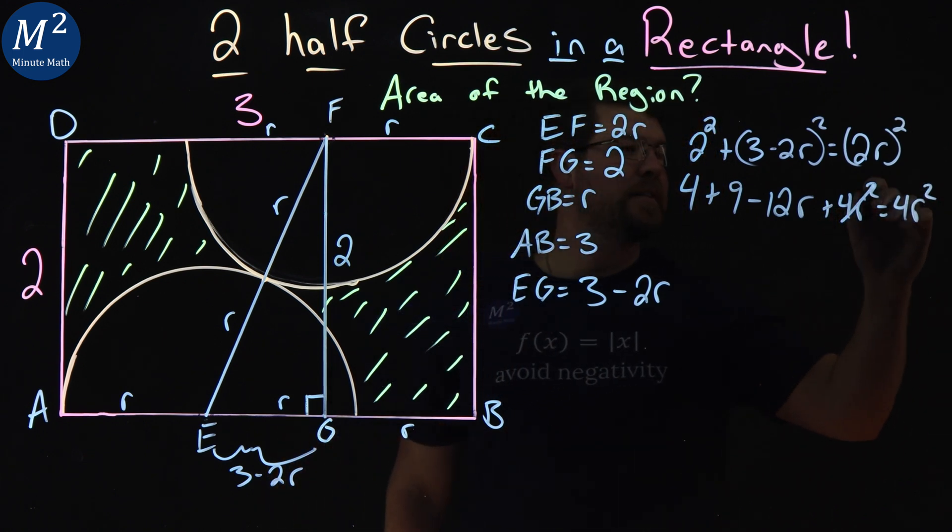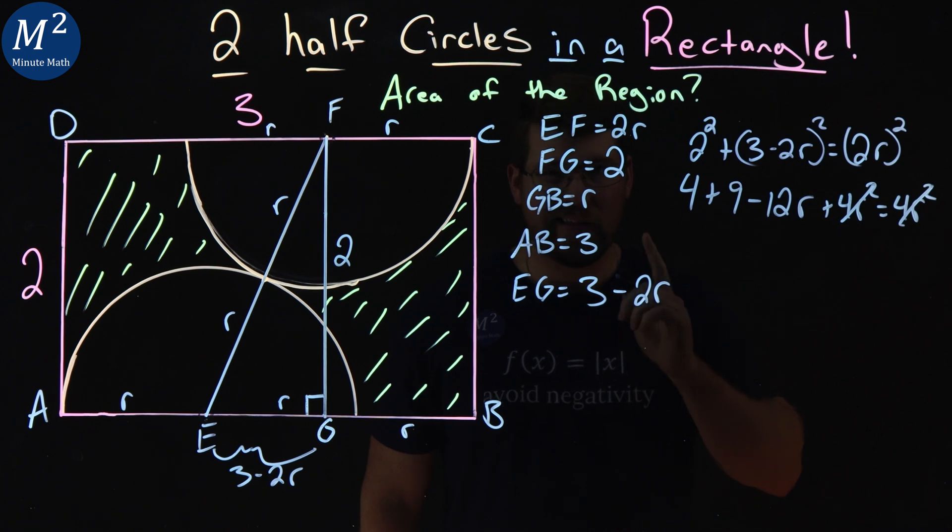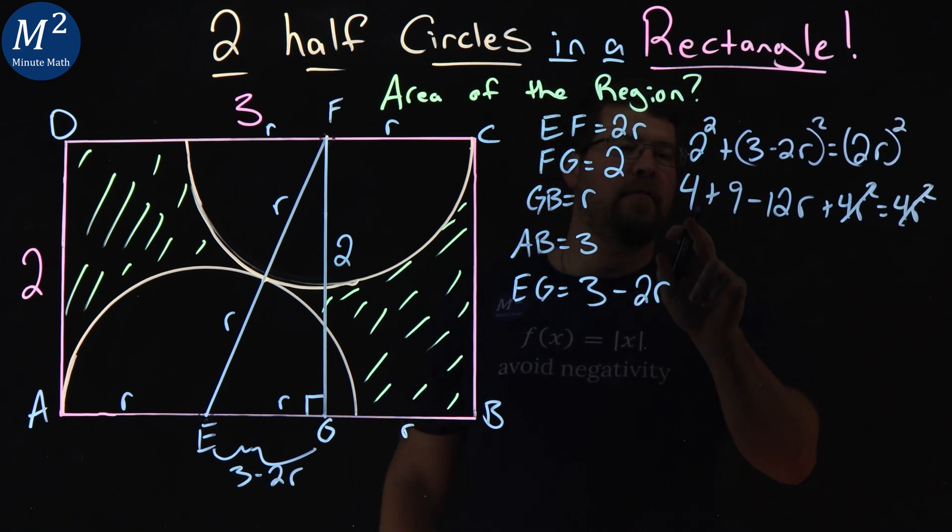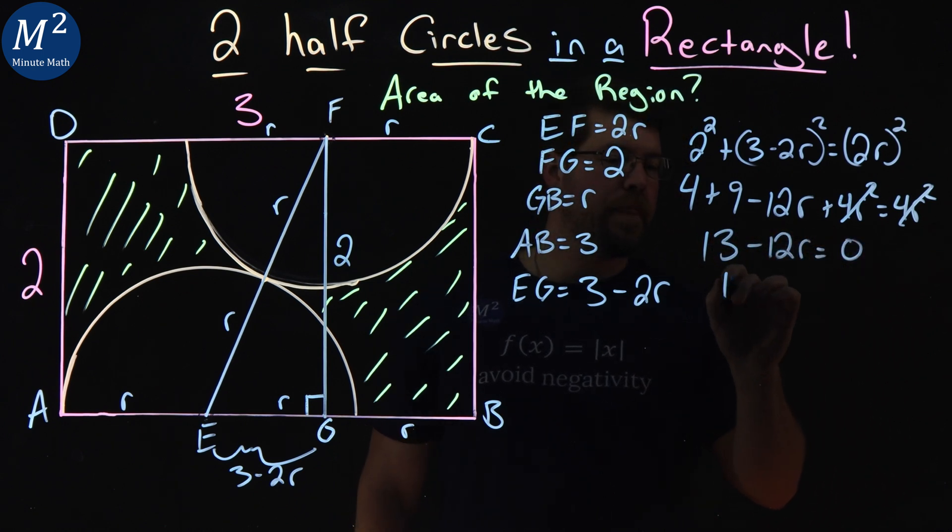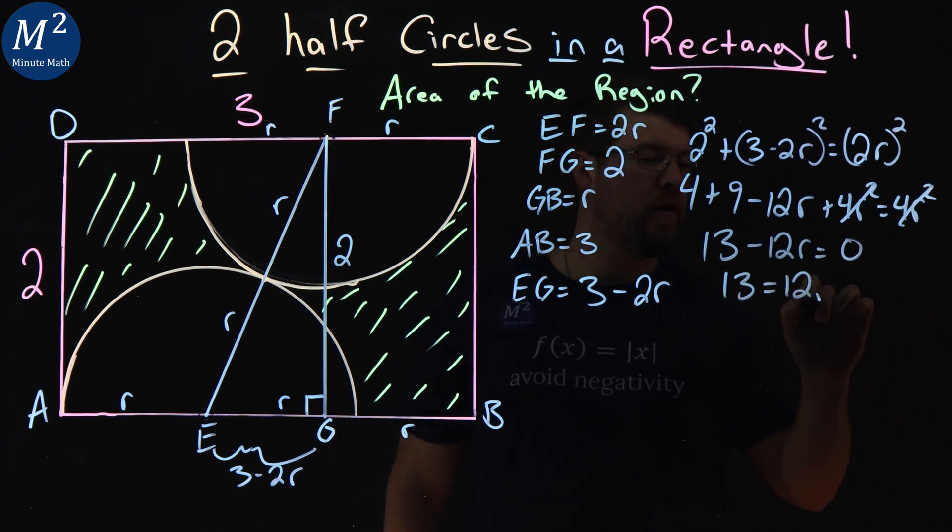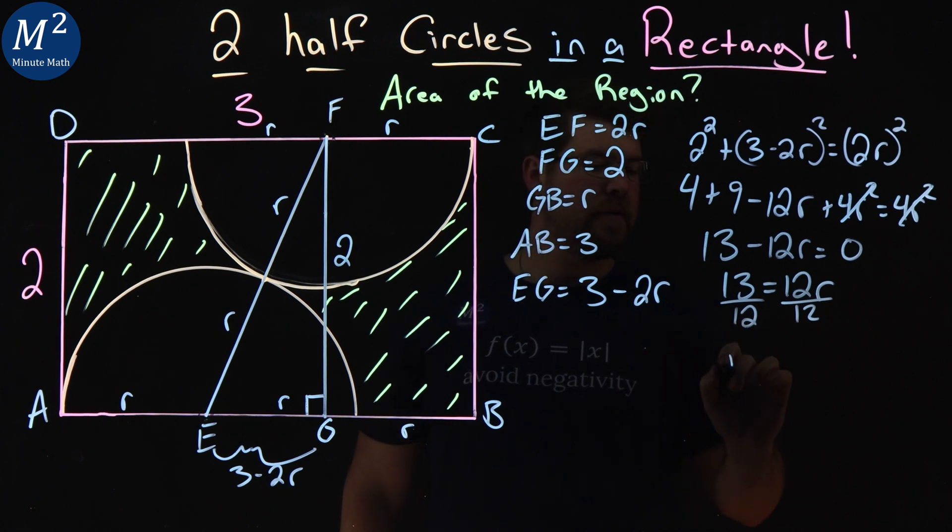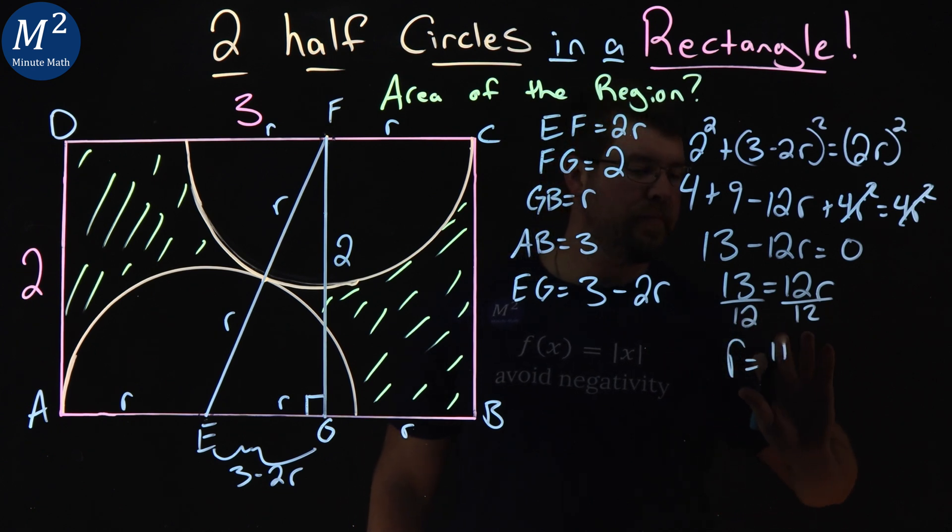Our R squareds cancel, which is always lovely when that happens. And 4 and 9 make a good old 13 minus 12R equals 0. Bring the 12R over. 13 equals 12R. Divide by 12, R equals 13 over 12.